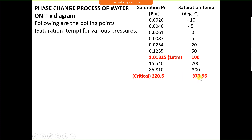At the critical point, water directly converts into vapour without boiling. The critical pressure is 220.6 bar and critical temperature is 373.96 degree Celsius — though values differ between textbooks: some use 221.2 bar and 374.14 degree Celsius (as in other books), versus 220.6 bar and 373.96°C in Moran & Shapiro.